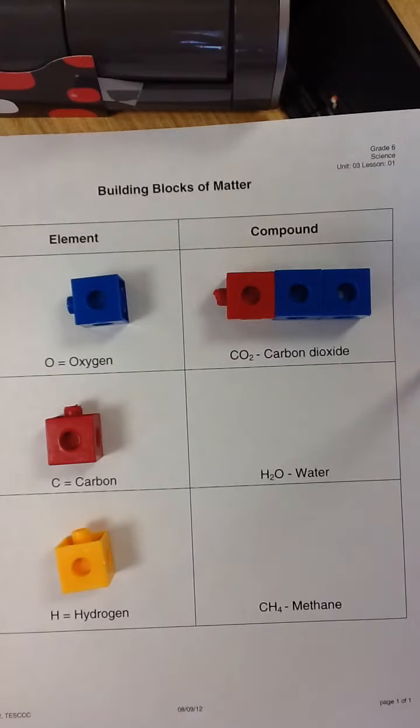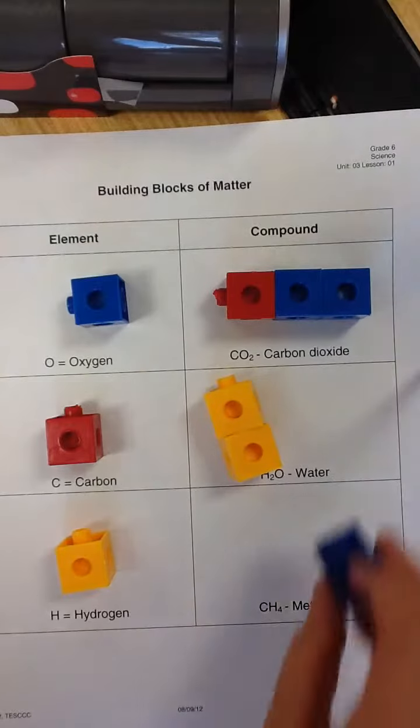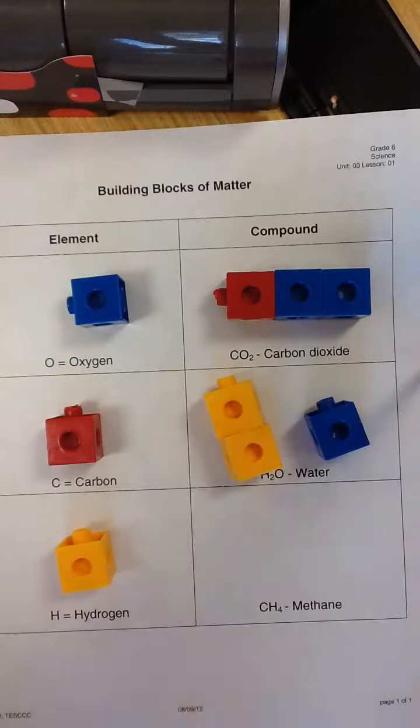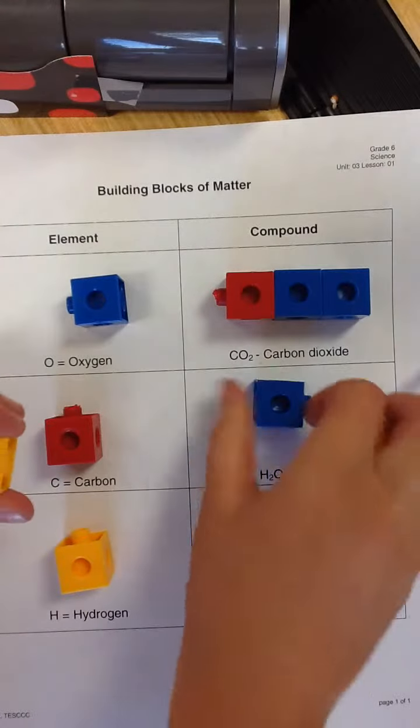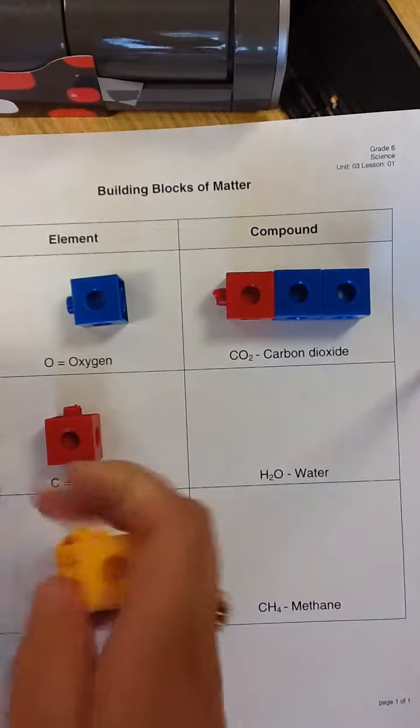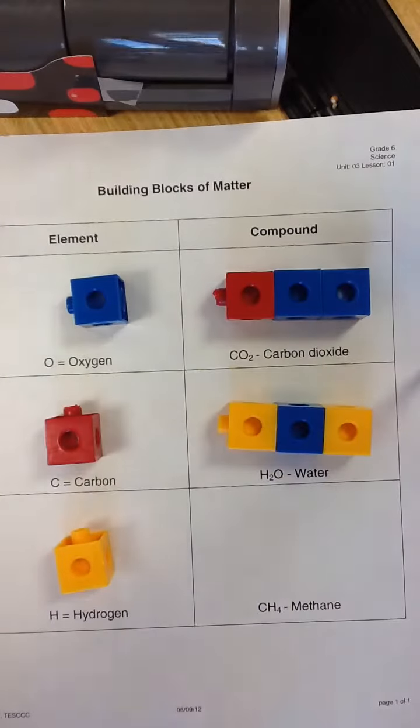For water, it's going to be represented by two hydrogens and one oxygen. So hydrogen is going to be two yellow and one blue. So right now, we have a mixture. They're not chemically combined, so they're two gases. But when we chemically combine them, they become a whole other substance, which is a liquid, which is the water that we drink.